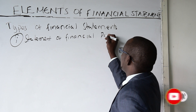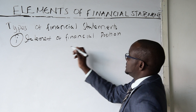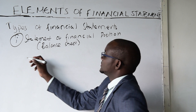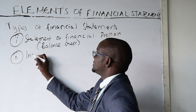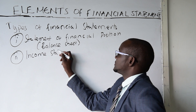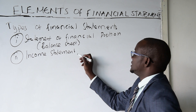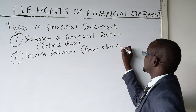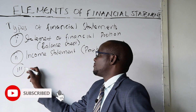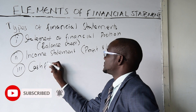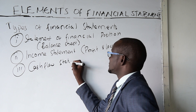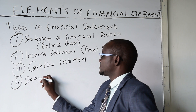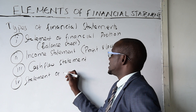The statement of financial position is what was previously called the balance sheet. Then we have what we call the income statement, which is what was previously called the profit and loss account. Three, we have what we call the cash flow statement. Four, we have the statement of changes in equity.